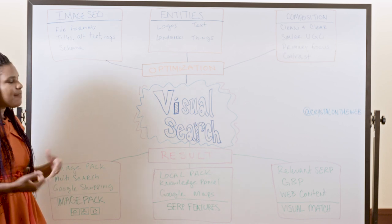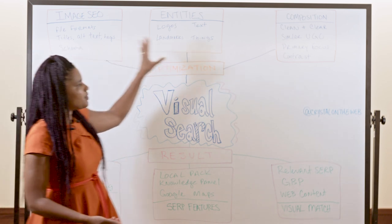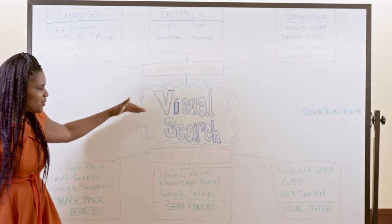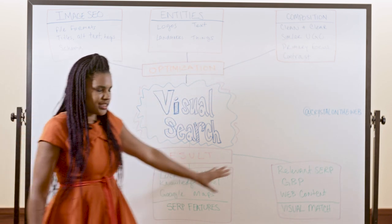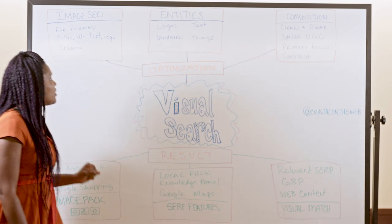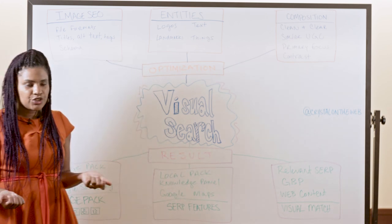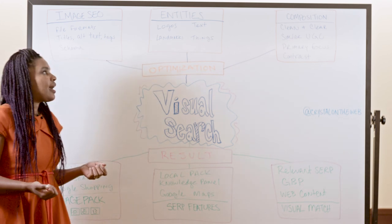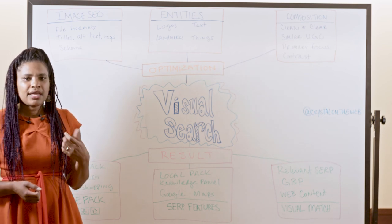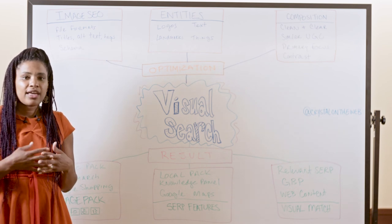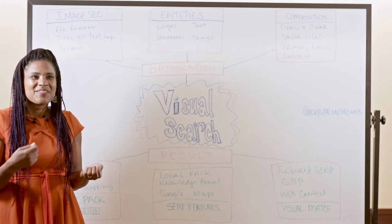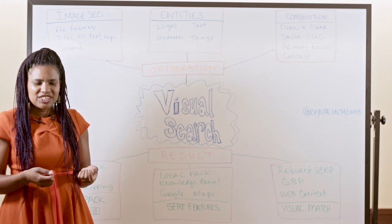So what happens with Visual Search is that you would do some optimizations on your website, then the user would do a Visual Search and then they might get a different kind of result. So the kinds of optimizations that you should consider for Visual Search, which is searches that are made via Google Lens or Pinterest Lens or via Bing's image search tools,